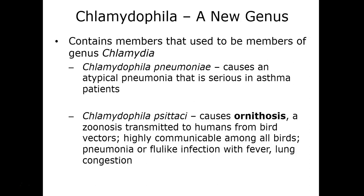Chlamydia pneumoniae causes an atypical pneumonia that is extremely serious in asthma patients; in most patients it causes a mild respiratory illness. There are also connections between Chlamydia pneumoniae and atherosclerosis, which causes damage to the heart. Chlamydia psittaci causes ornithosis — a disease transmitted to humans from bird vectors and extremely communicable among birds, resulting in a flu-like infection, pneumonia, and fever.